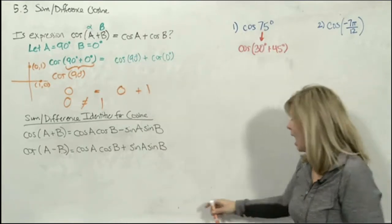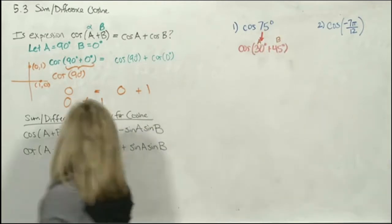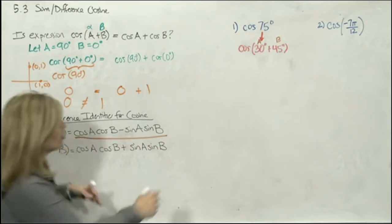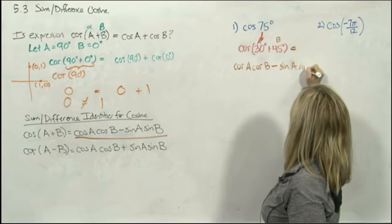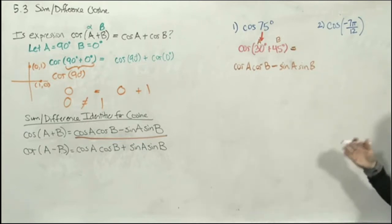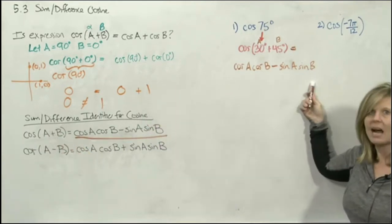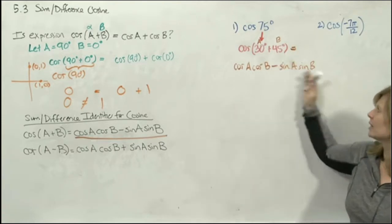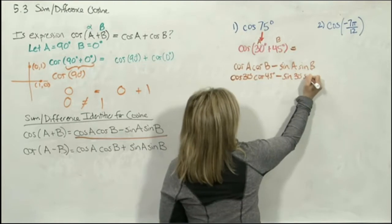I can rewrite 75° as 30° + 45°. I know I can look up 30° and 45° from the right triangles. Your first instinct will be to distribute the word cosine — but you can't. So you recognize: I am adding two angles, this is my alpha, this is my beta. There's an identity. Cosine(alpha + beta) equals cosine alpha · cosine beta minus sine alpha · sine beta. Substituting, this becomes: cosine(30°) · cosine(45°) minus sine(30°) · sine(45°).